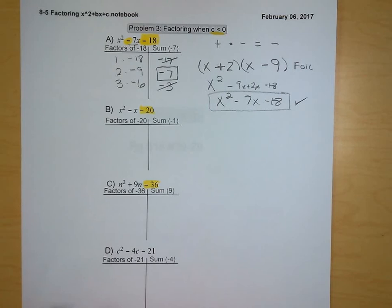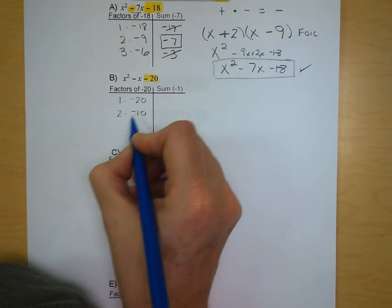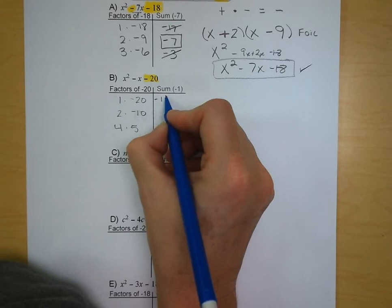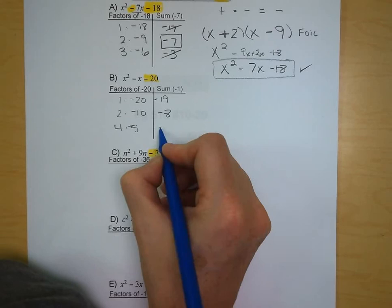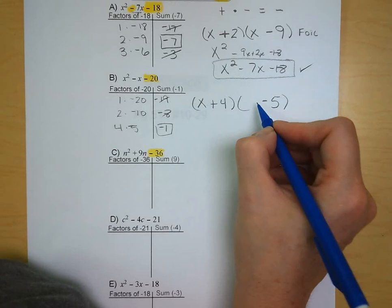Letter B: x squared minus x minus 20. Factors: 1 and negative 20, 2 and negative 10, and 4 and negative 5. Their sums are negative 19, negative 8, and negative 1. It's that third set of factors — 4 and negative 5. So we have x plus 4 and x minus 5.